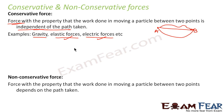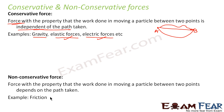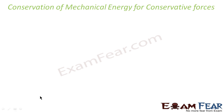On the other hand, a non-conservative force is a force with the property that the work done in moving a particle between two points depends on the path taken. That means if you follow one path, the work done will be something, and if you follow some other path, the work done will be different. The best example of a non-conservative force is friction.